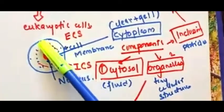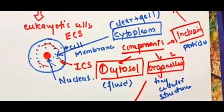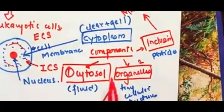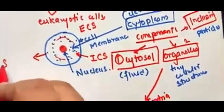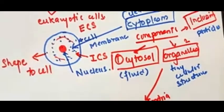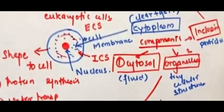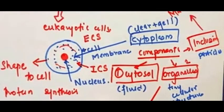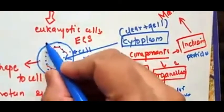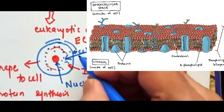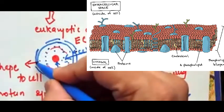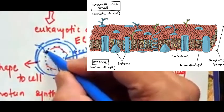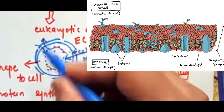The cytoplasm has important functions. First, the amount of fluids, organelles, and inclusion particles actually gives shape to the cell — so cytoplasm is responsible for maintaining the shape of the cell. Regarding exchange of nutrients, the cell membrane which holds the cytoplasm is made up of a plasma membrane which is semi-permeable, allowing particles to come into and go out of the cell.